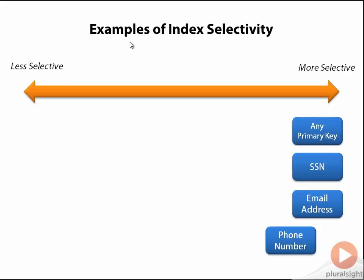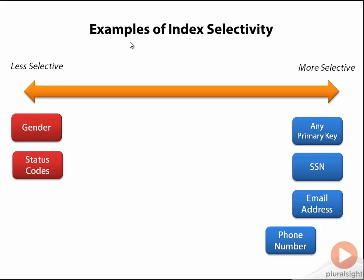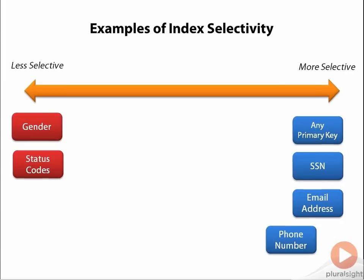At the other end of the spectrum, a column such as gender is not very selective at all. There are only two possible values, so we would expect the data to be roughly divided evenly between them. Status codes are another example of columns that are typically not very selective. In each of these cases, there just aren't very many unique values, so for any one of the values specified, we're going to get back a very large percentage of the rows in the table, and this doesn't really help us trim our data set down to a reasonable size. Of course, most columns fall somewhere in the middle of this continuum, and their selectivity depends upon the distribution of data in your database. They may or may not form good index candidates on their own and may need to be combined with other columns.